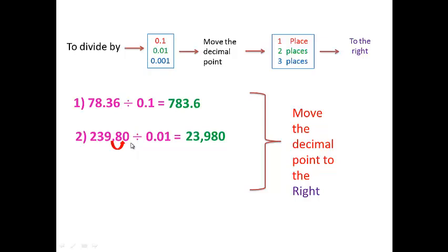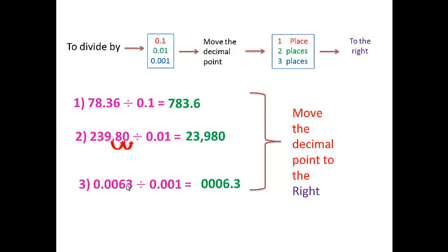Continuing: divide by 0.001 also converts into multiplication. Move the decimal point to the right according to how many digits are in front of the decimal point — here three digits, so three moves. Count 1, 2, 3. The point will set between 6 and 3.